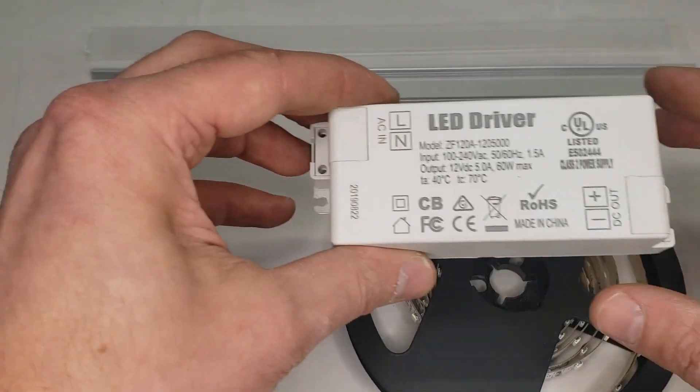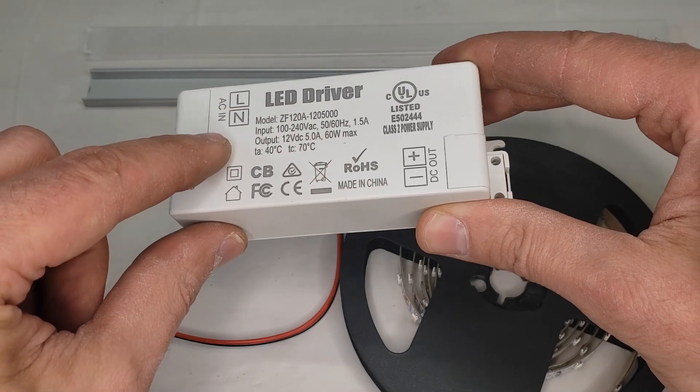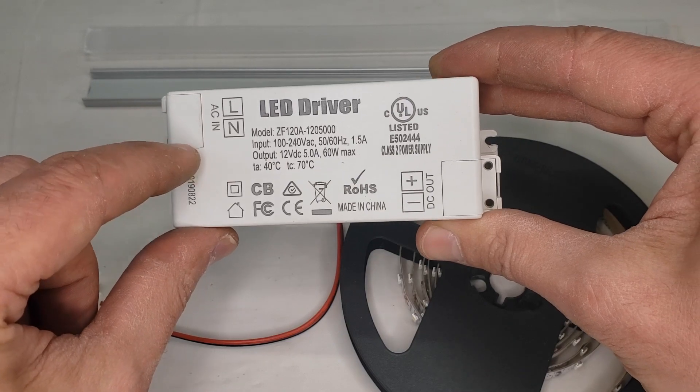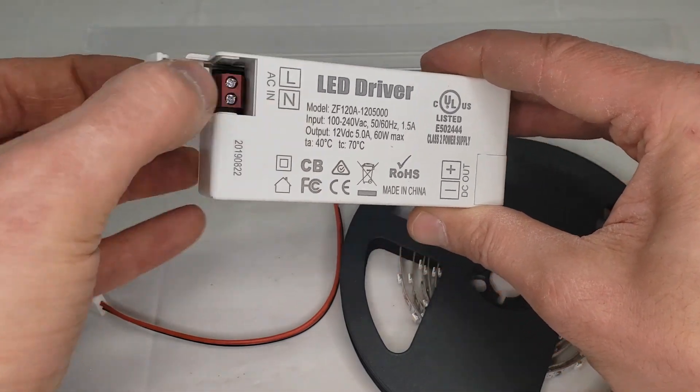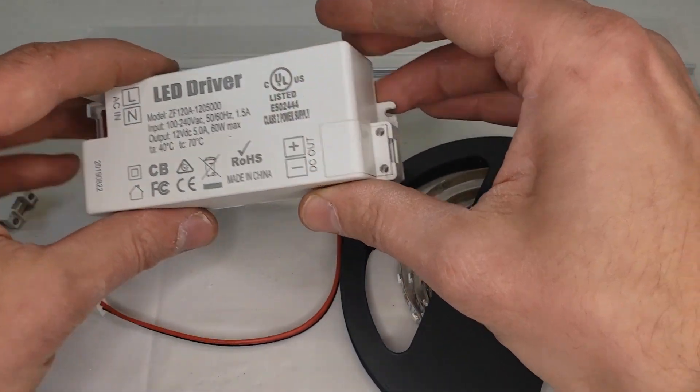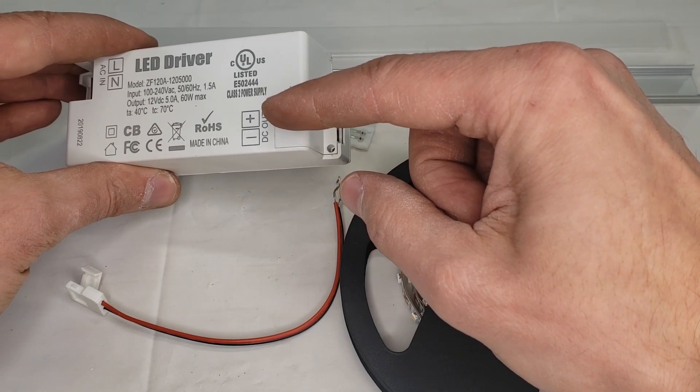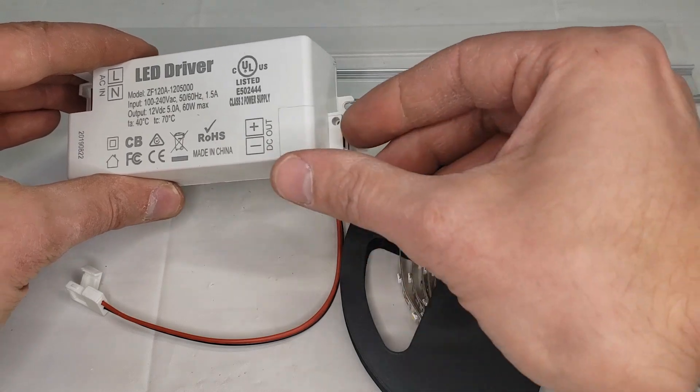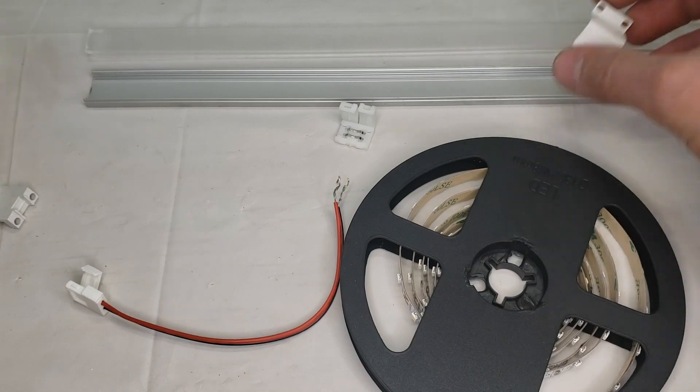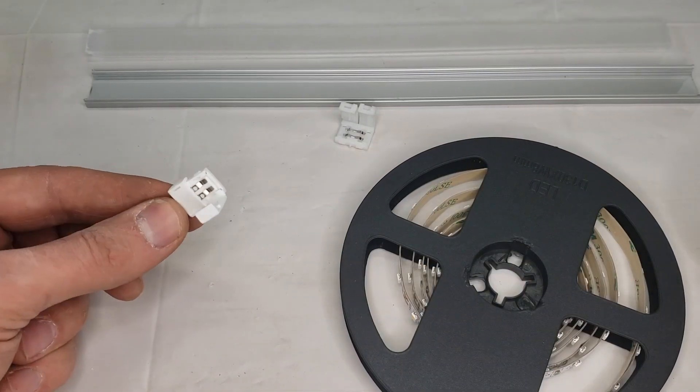We're going to start with our LED driver. The AC line and neutral—this is where the 120 volt power goes. Line is your black, neutral is your white, and the connections are just under here. They're just going to go under those screws. On the DC side you have your positive, which is red, and your negative, which is black.